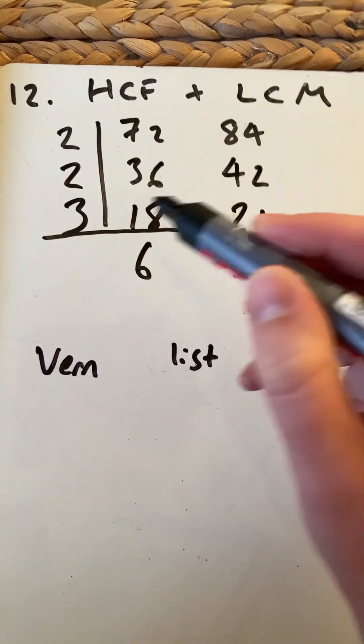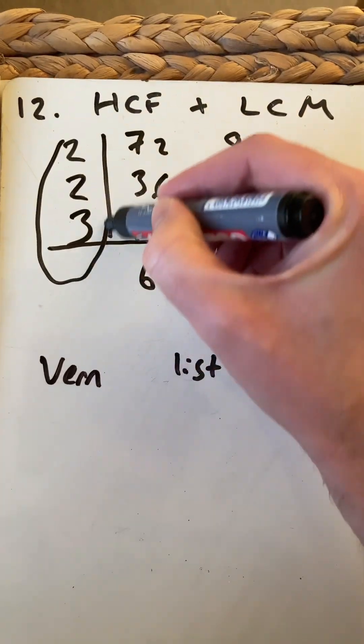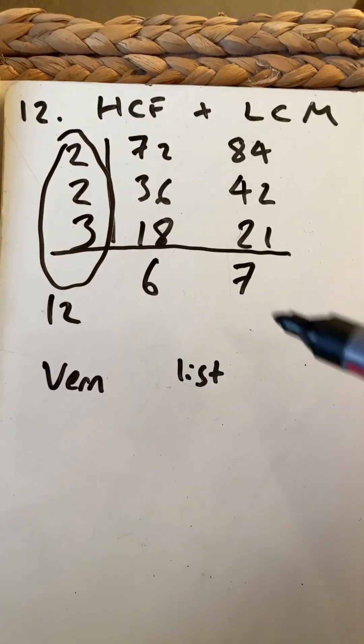Because that's prime, I'll draw a line there. Now those make the product 12, and that is the highest common factor.